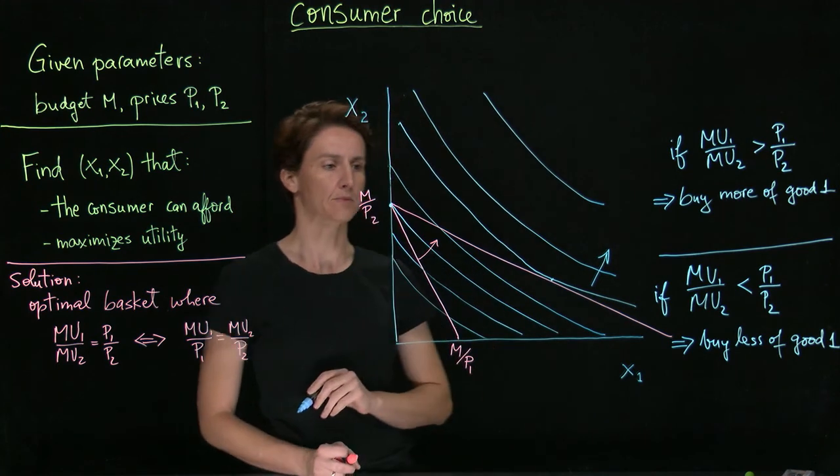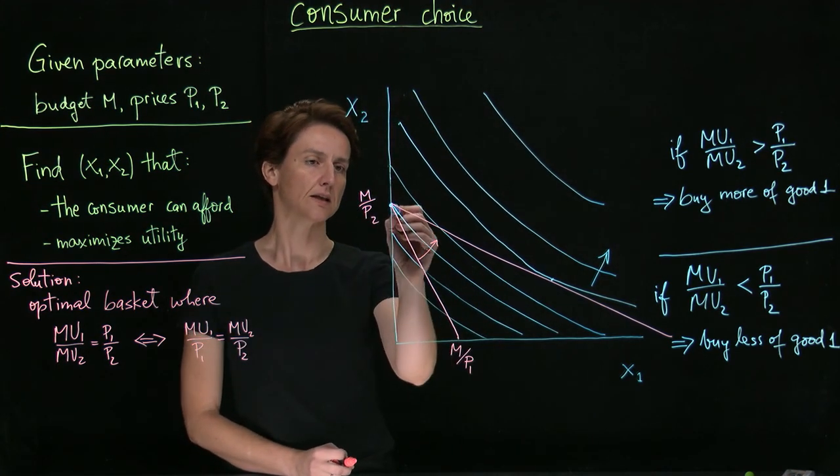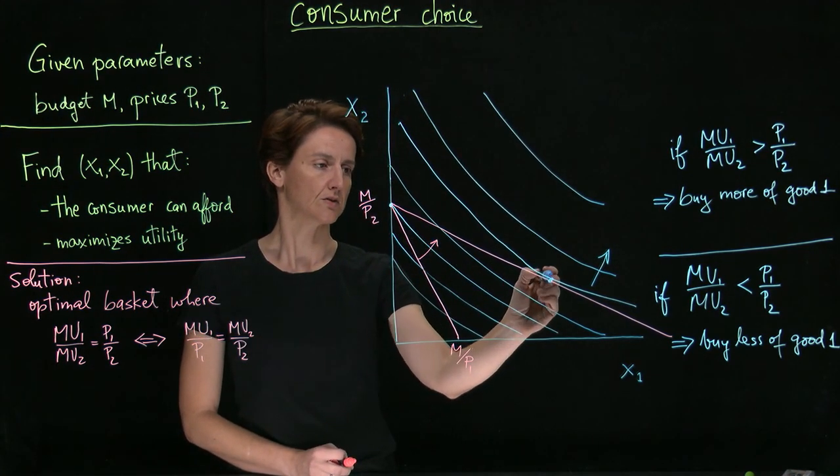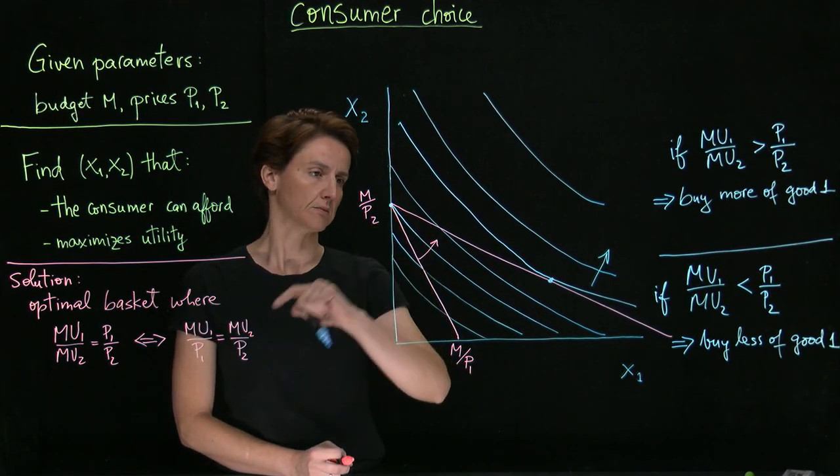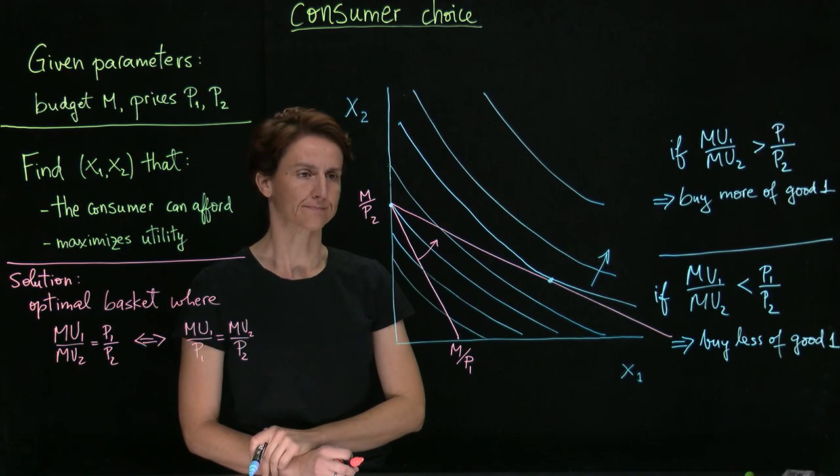So a tangency might be here, for example. So this would be a case where in response to good one getting cheaper, we increased consumption quite a bit and about halved consumption of good two.